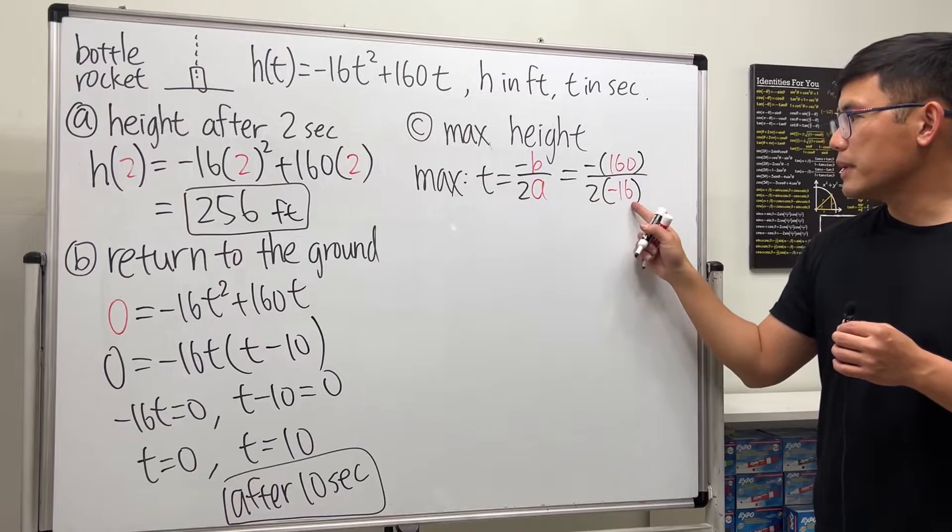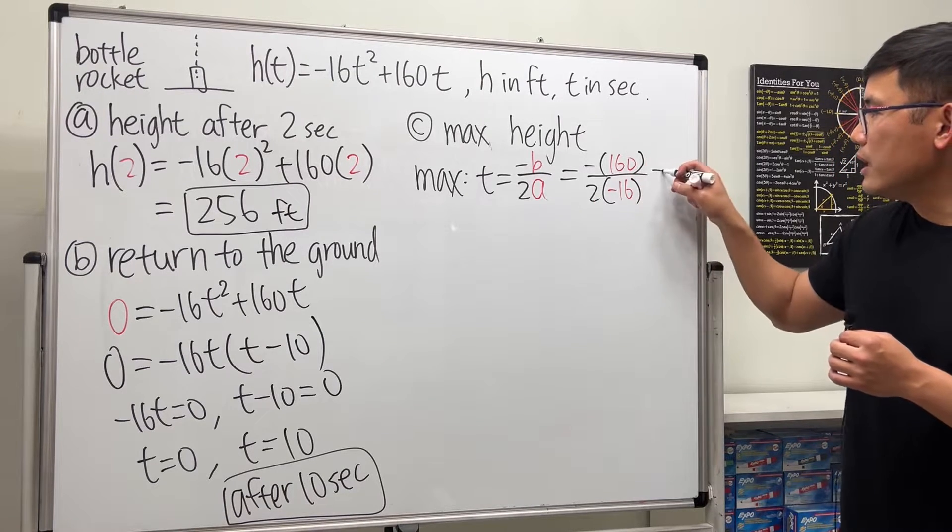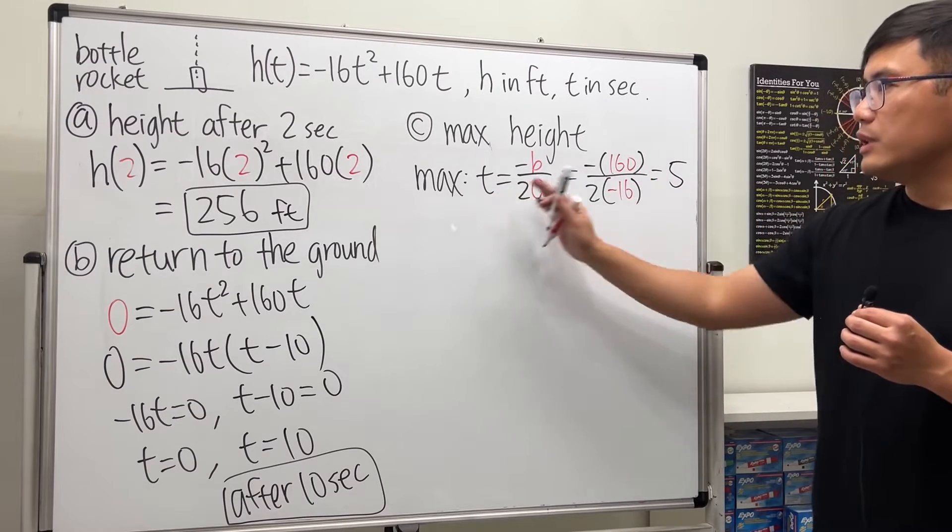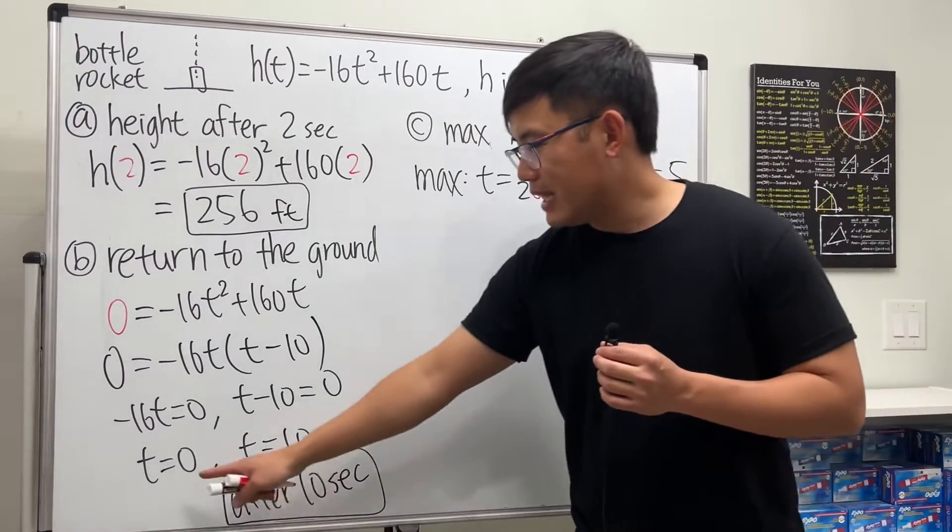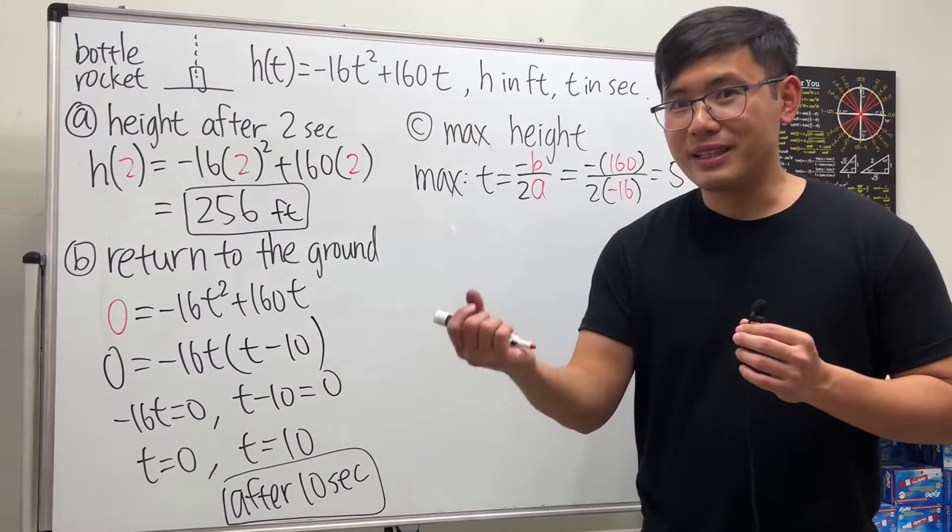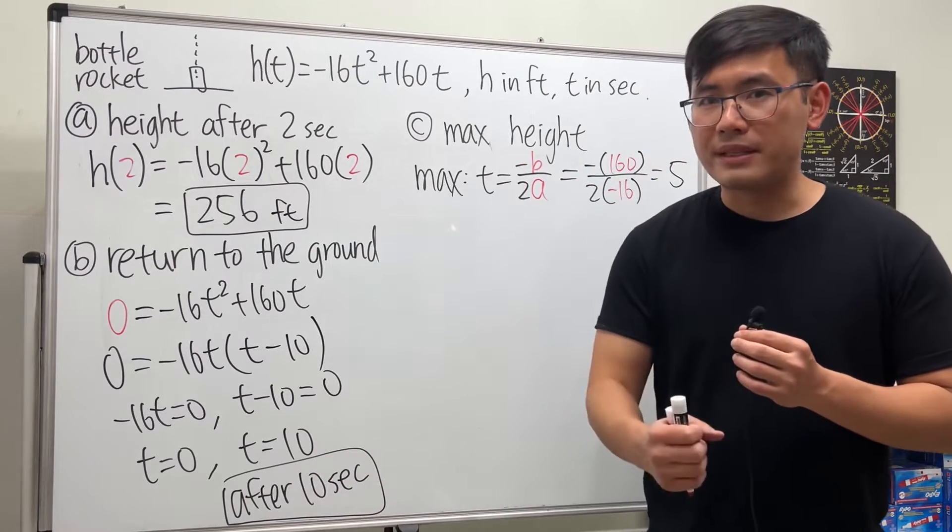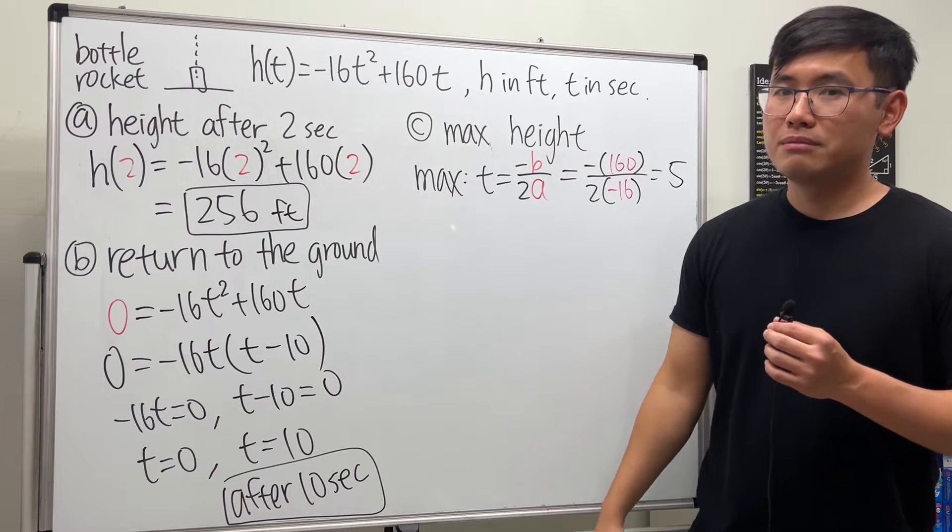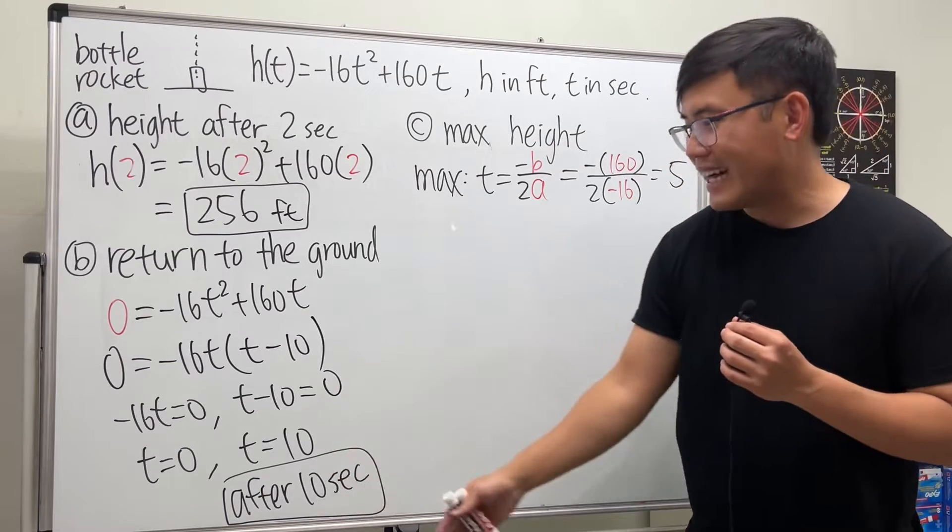If you multiply this out, you get -32, and if we divide we get positive 5. So when t = 5, we get to the maximum. In fact, originally it was on the ground at t = 0, and after 10 seconds it drops back down. Right in the middle is where the maximum happens.